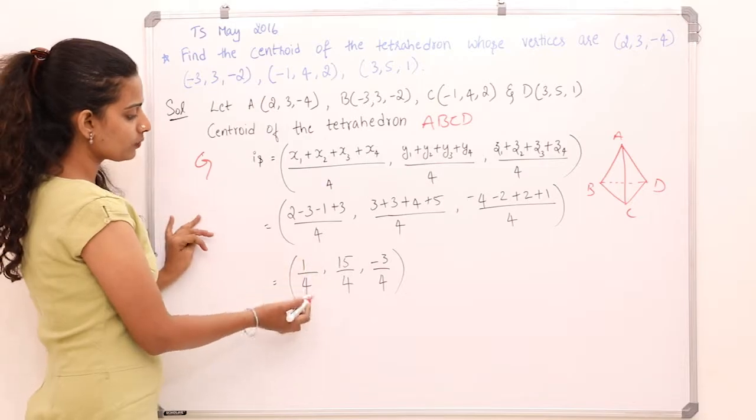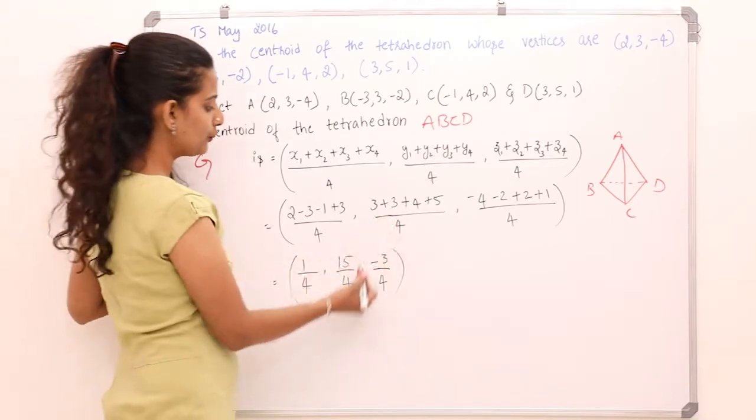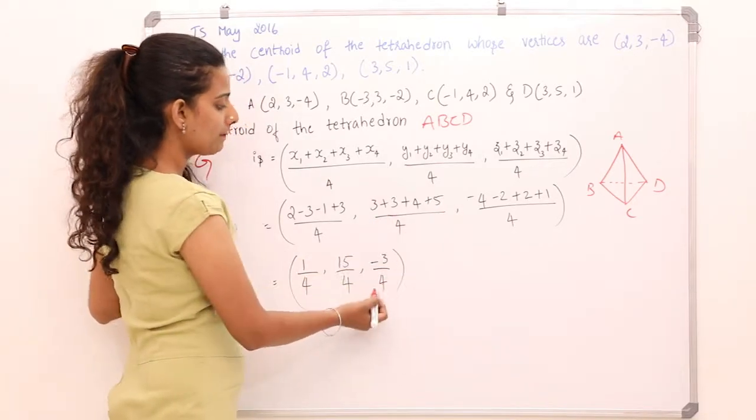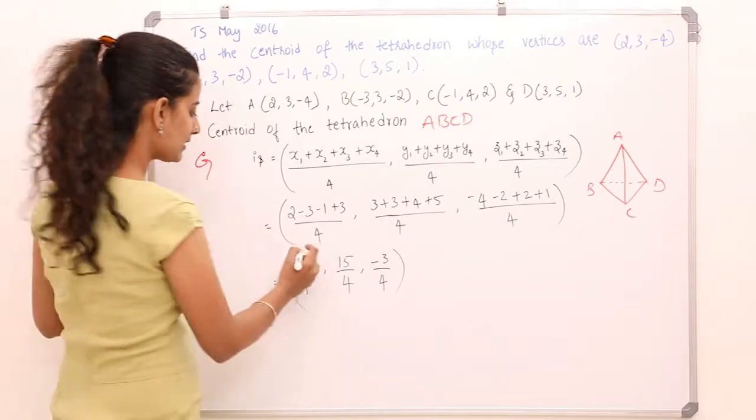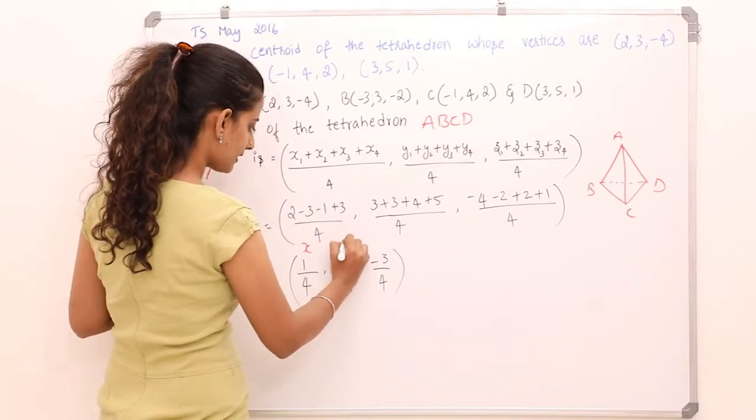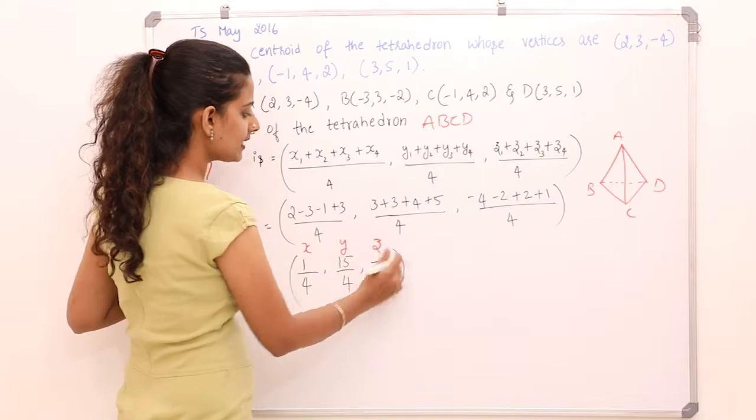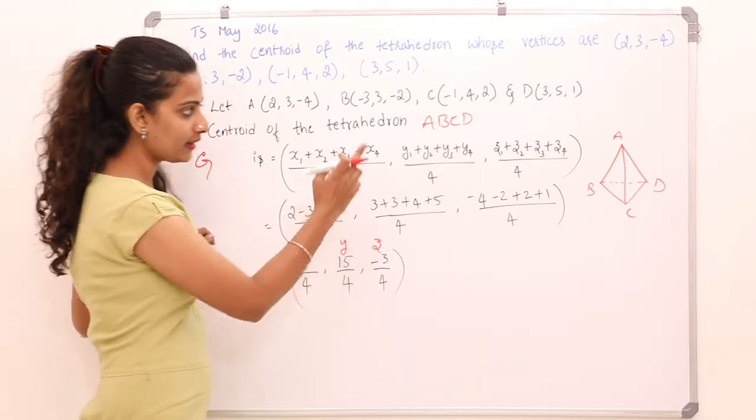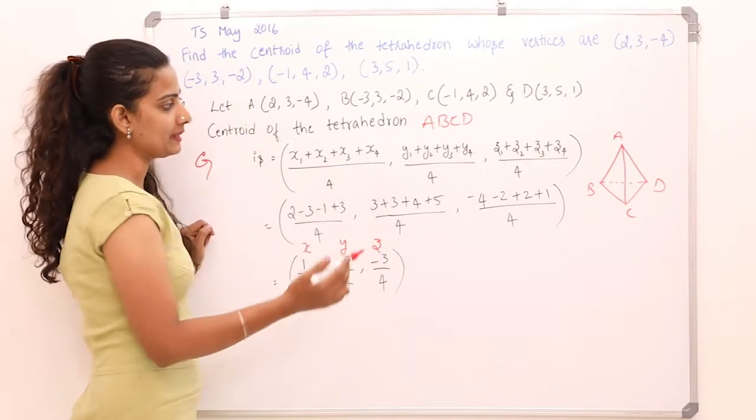So when you simplify this, this becomes 1/4, 15/4, -3/4. So this is the x coordinate, this is the y coordinate, and this is the z coordinate of the centroid of the tetrahedron ABCD.